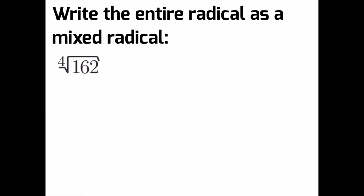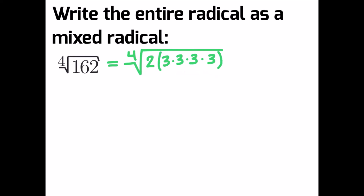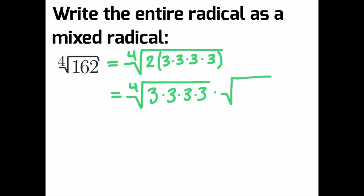The last example tells us to write the entire radical as a mixed radical, this time for the fourth root of 162. Write out the prime factors of 162. Since we're looking for the fourth root, we ask: are there any quadruplets we can make? In this example we can. So we write the quadruplet first — the fourth root of 3 times 3 times 3 times 3 — and what's left over from the original radical, the fourth root of 2.